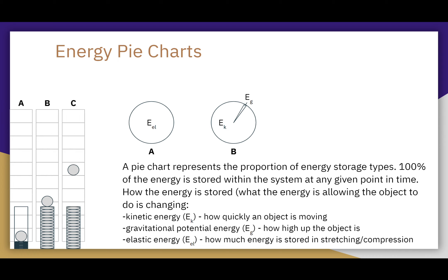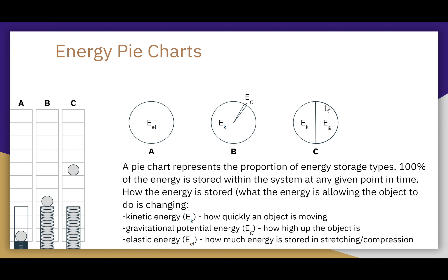At point C, the ball has cleared the launcher and is about halfway up. The spring is still completely decompressed, so there's no elastic energy. The ball is even higher up, so there's more EG in this pie chart. Because gravity is the only force acting on the ball while it's in the air, there is a downward acceleration constantly slowing the ball. So while the ball is still moving upward, it's not moving as quickly — kinetic energy is less than at B, but EG is greater because the ball is higher.